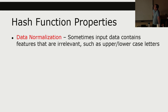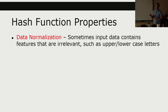Data normalization: sometimes your input data contains features that are kind of irrelevant. For example, maybe in a machine learning application a user is typing a sentence and you don't care whether they capitalize the first letter or use alternative capitals — it's the content of the sentence you're looking for. Some hash functions can normalize data so you don't need to worry about those types of variations in the inputs.